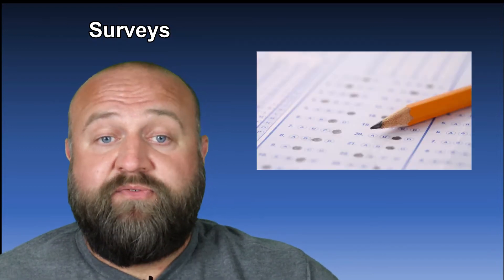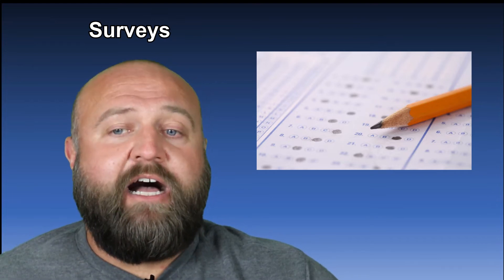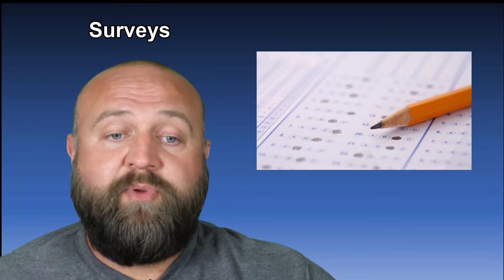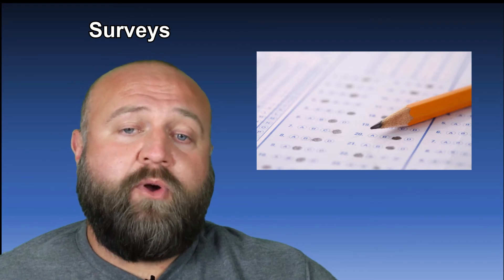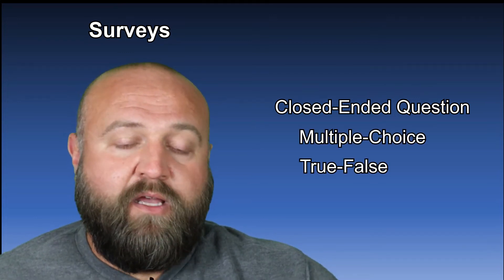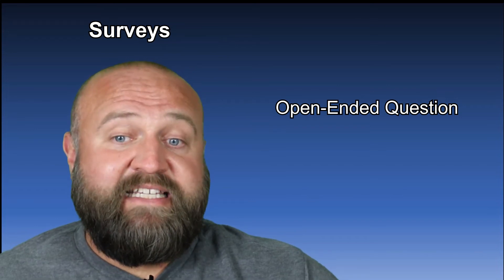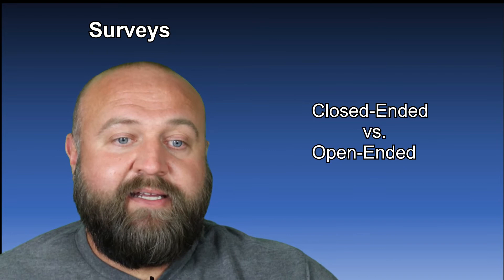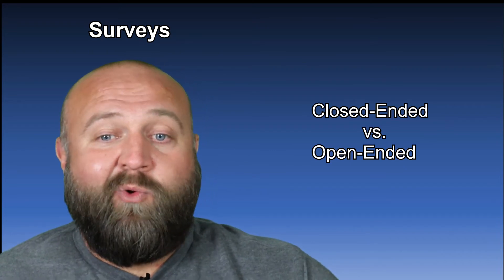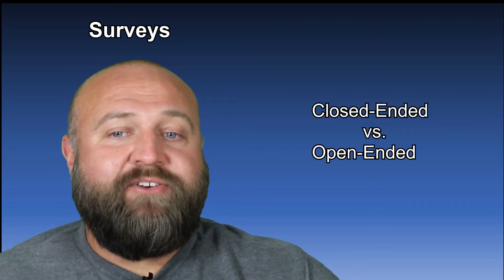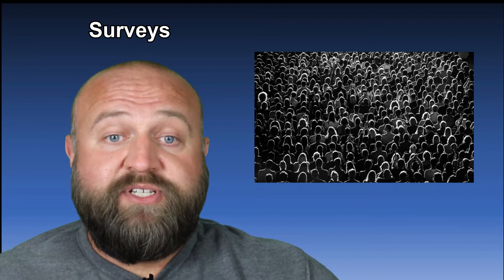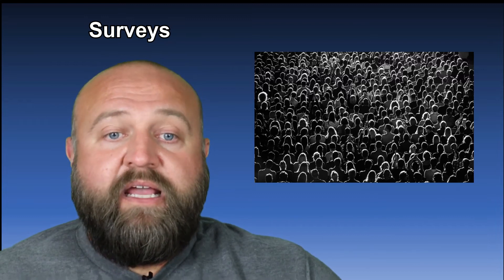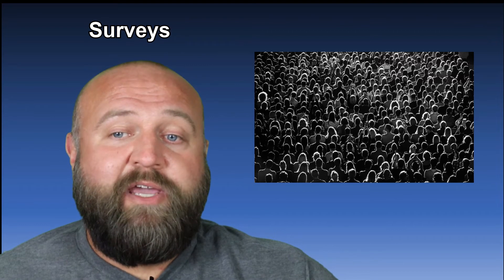The next type of study we're going to talk about are surveys. There are many different types of surveys, but what they have in common is that they present predetermined questions to a large group of people. This can be in the form of closed-ended or open-ended questions. A closed-ended question can only be answered a certain way, like a multiple choice or true-false question. An open-ended question allows a person to be more descriptive, like an essay-type question. Surveys ask the exact same questions to a large group of people, and the results can then be analyzed and conclusions drawn.